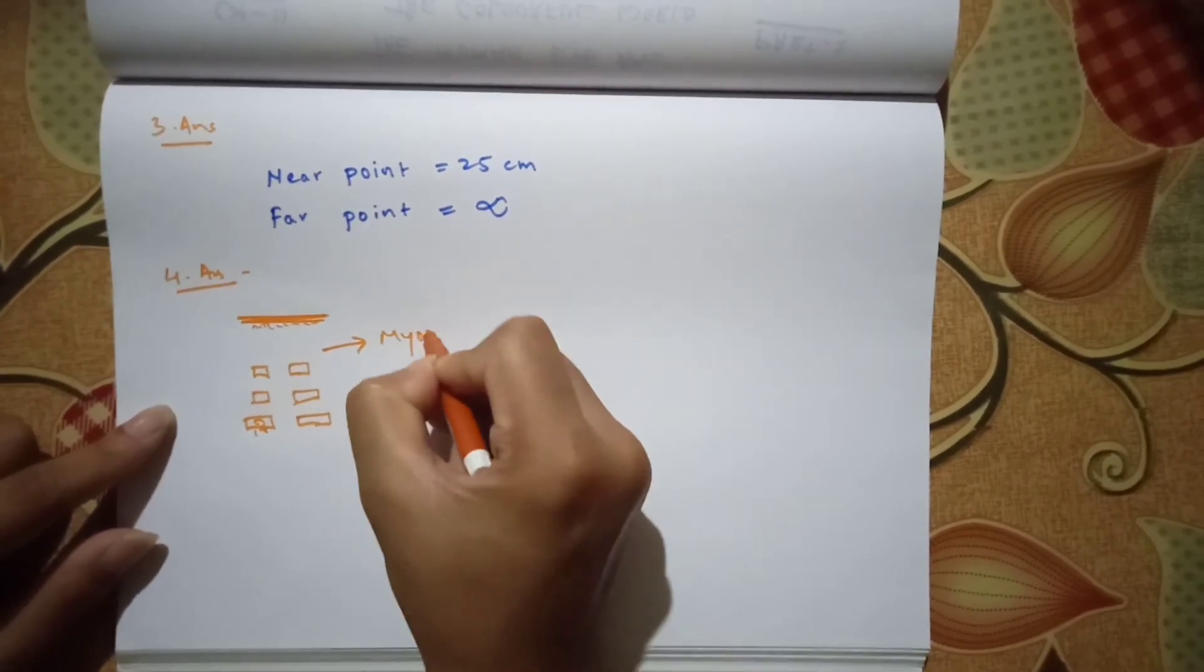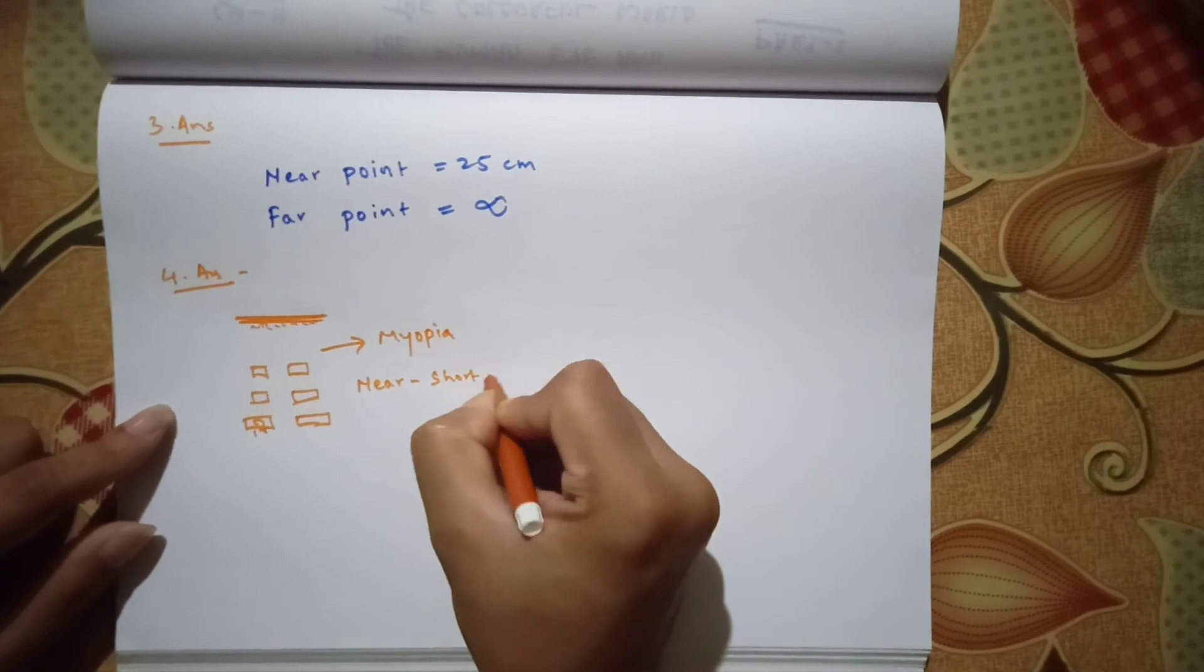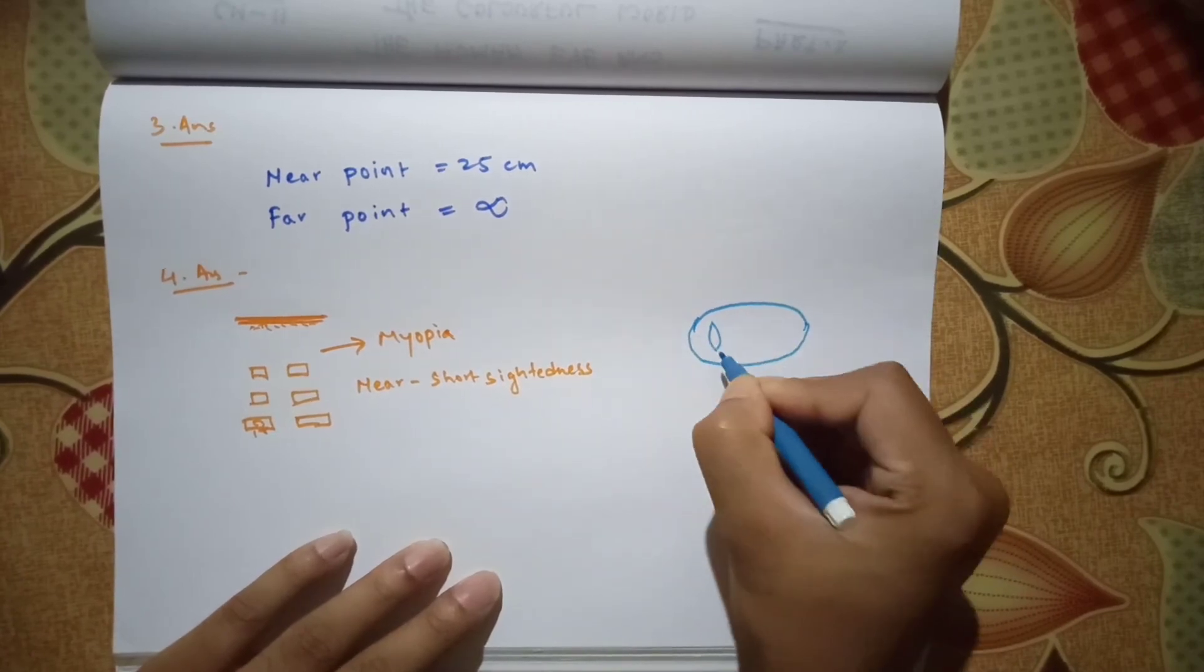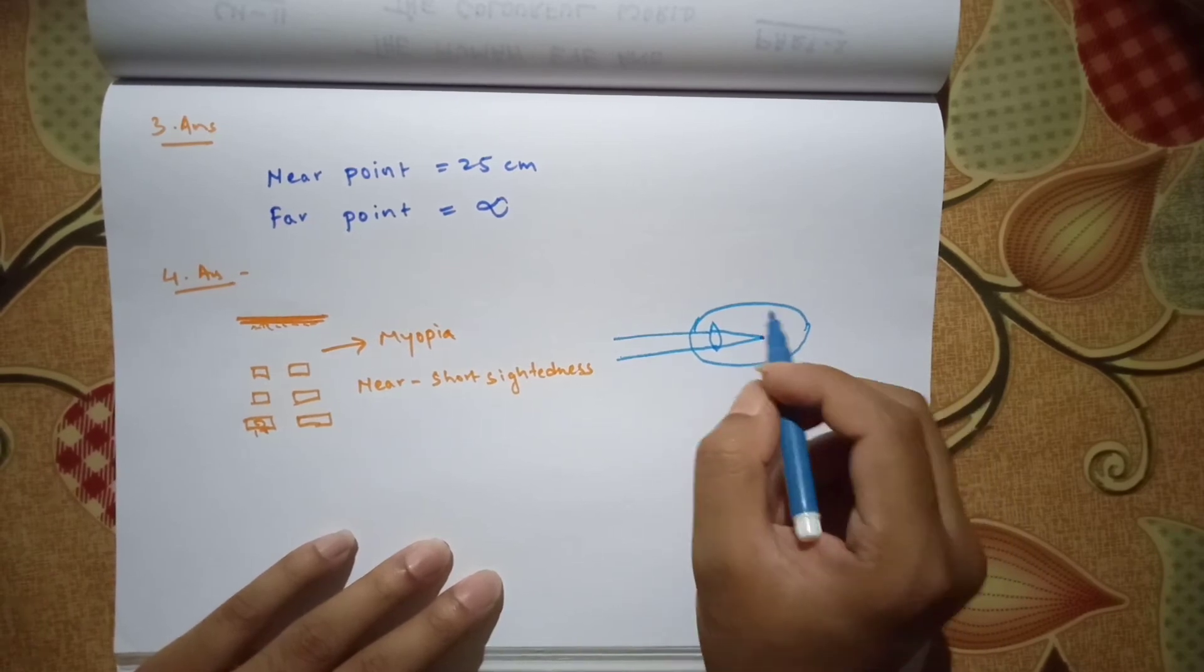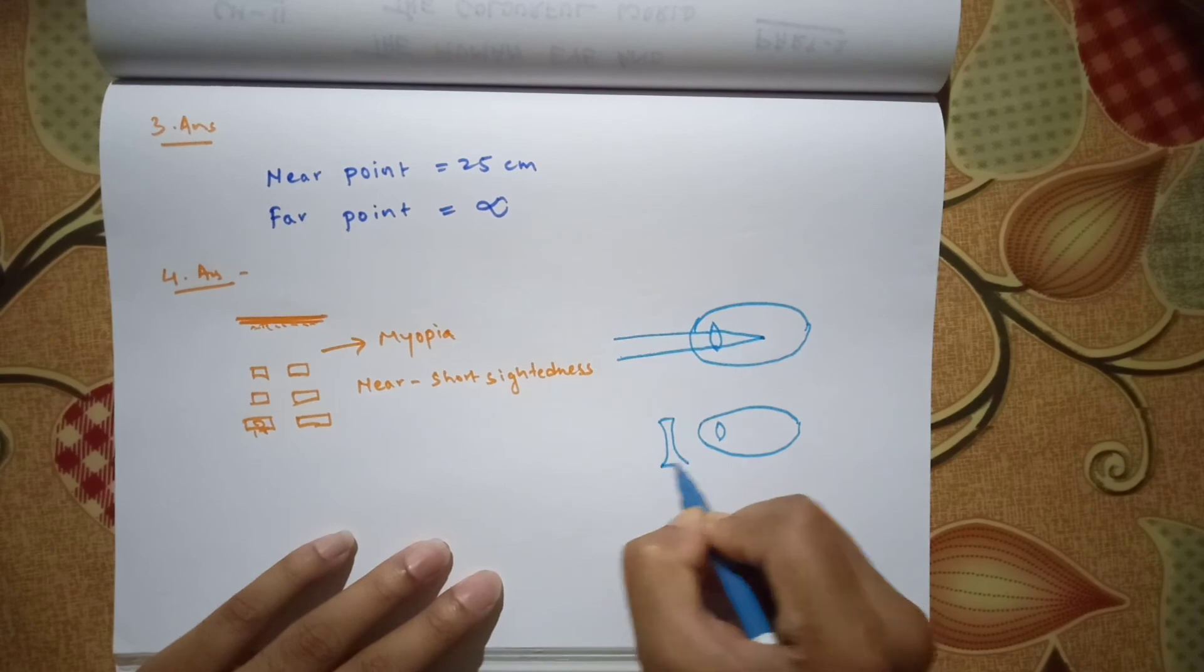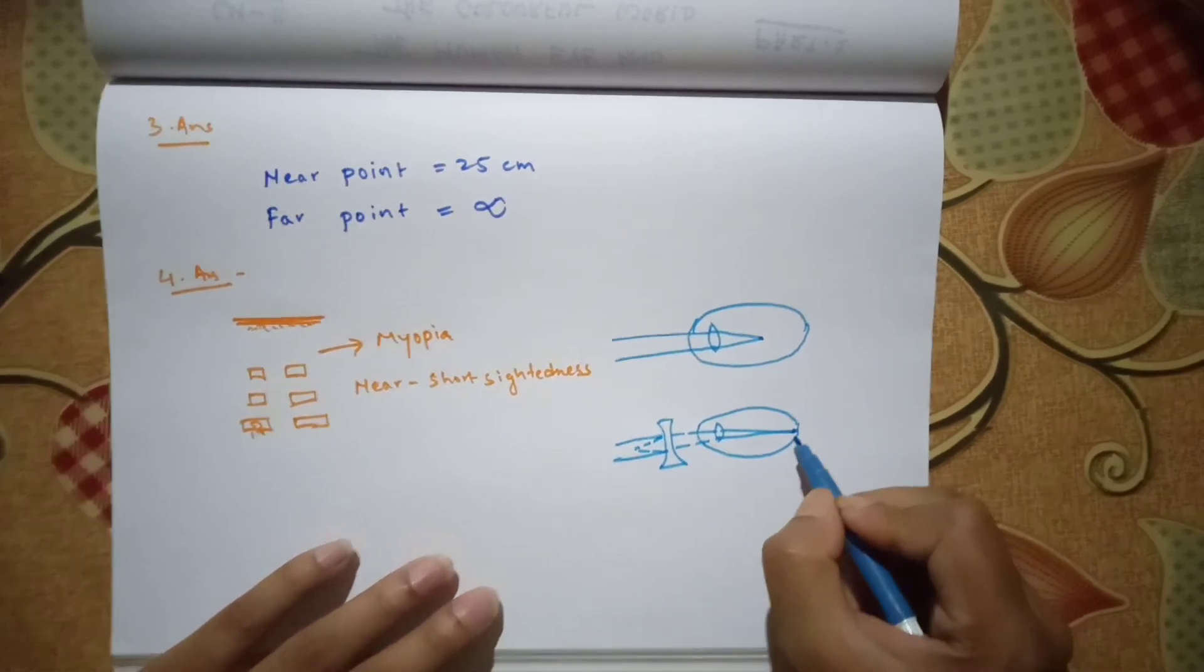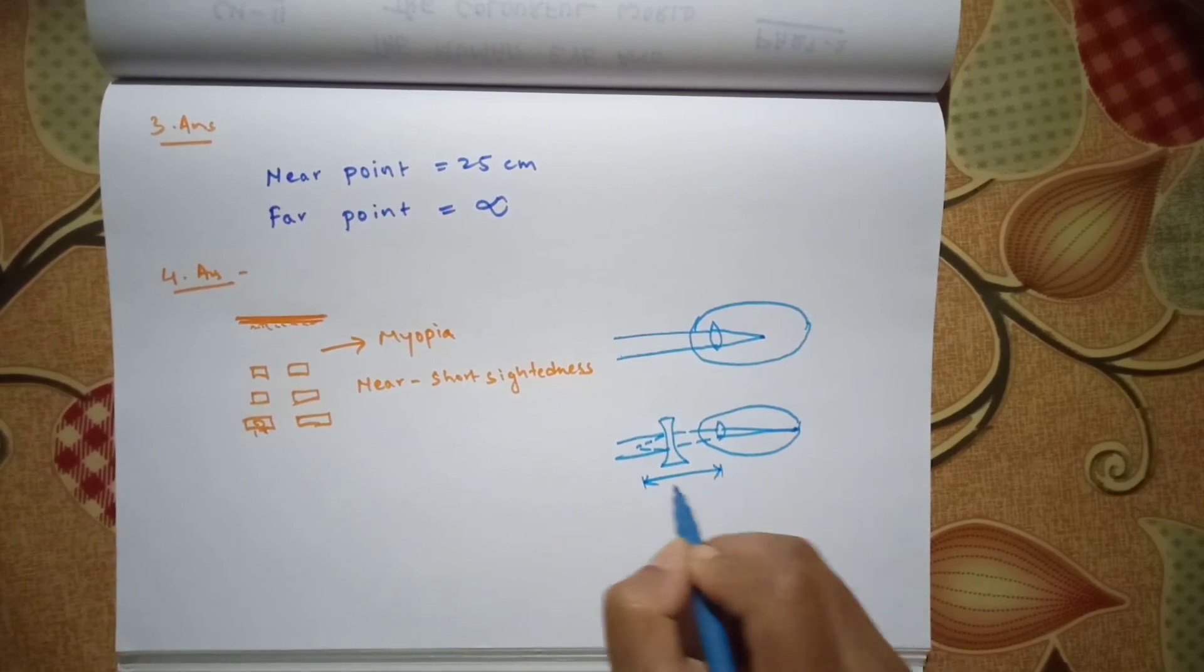It means the student is not able to see the far object, which means the student has myopia. So we got the defect he has. It is also known as near or short-sightedness. Now how can it be corrected? Let us take this as an eyeball, this is the lens. We know that the image formed in a myopia eye is in front of retina. To solve this problem, we have to push the image to the retina. That is why we use a concave lens which allows the image of the object to flow to the retina so that the person is able to view the image. Always remember the size should be of the focal length the student wants or has.